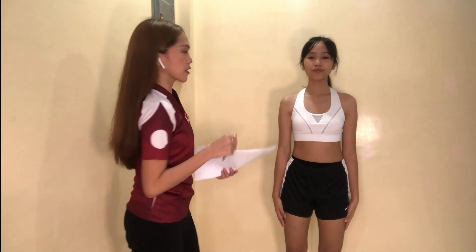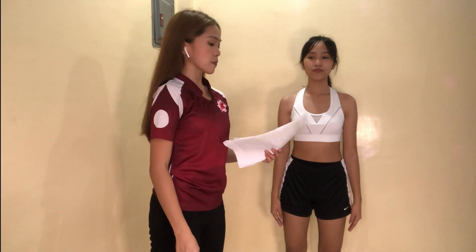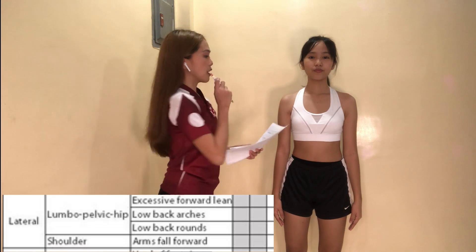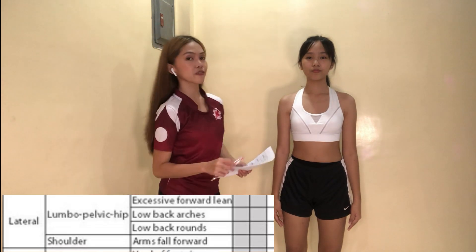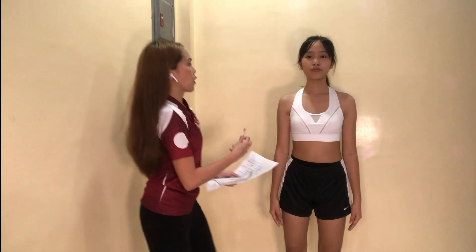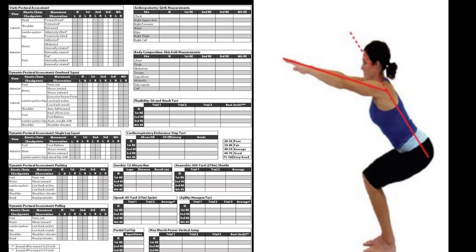For the shoulder, the expected movement observation is if my client's arms fall forward while performing the overhead squat. I still need to check both the right side and the left side. Here's an example of arms fall forward — as you can see, her arms as well as her shoulders drop or shift forward from their normal position.